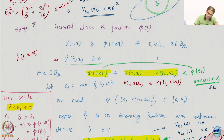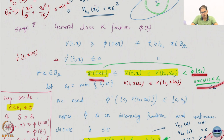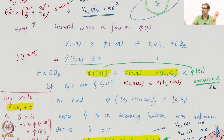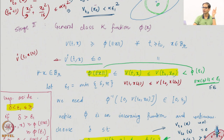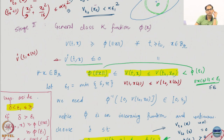Therefore, if you have φ(‖x‖) < φ(ε₁), then ‖x‖ has to be less than ε₁. I hope this is evident — a function that is 0 at 0 and monotone increasing: if the function value is less than φ(ε₁), the argument has to be less than ε₁, there is no two ways about it. This is rather neat. Invertibility is in play because both sides are real numbers; invertibility is guaranteed by monotonicity.